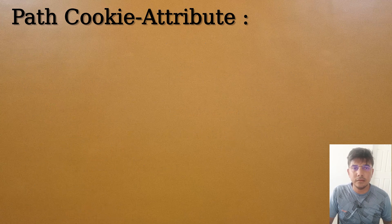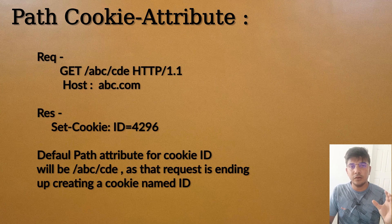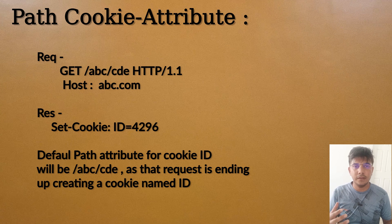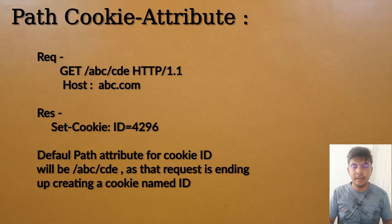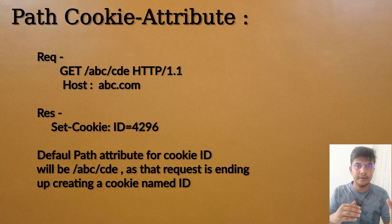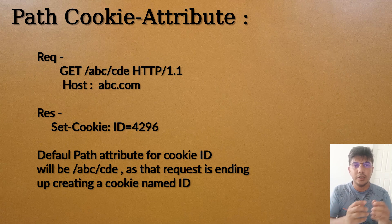What happens if the path is not set by the server? The default value of the path cookie attribute will be the URL path that was used when setting the cookie. For example, if you make a GET request to /abc/cde and the response does not set the path, then by default the path will be set as /abc/cde — whatever path was used during the creation of the cookie will be used by default.